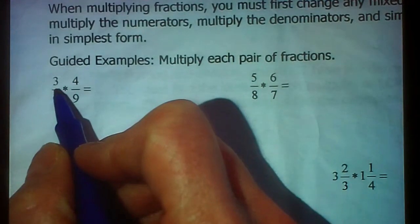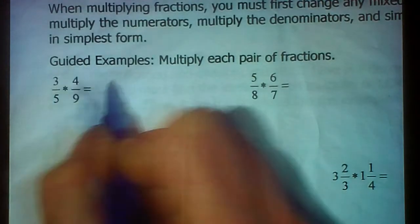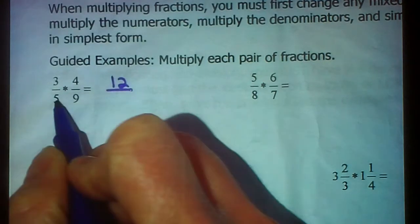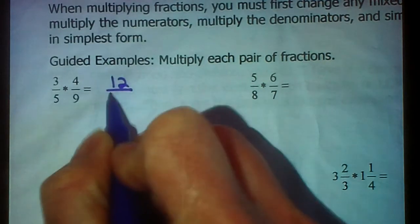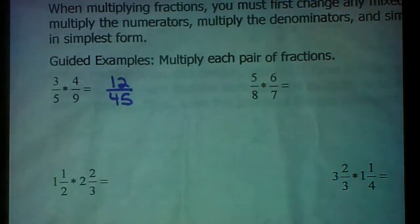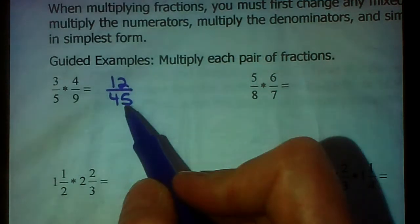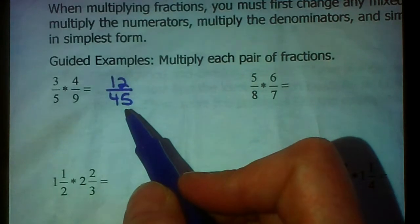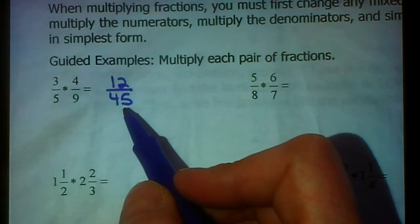I'm going to multiply across the top. 3 times 4, that's 12. 5 times 9, that is 45. And if you didn't know that, extra math is part of your summertime as well. You'll find yourselves getting really good at these facts if you practice on a daily basis. Alright, and looking at 12 and 45, the GCF of 12 and 45, do you have it? It is 3.